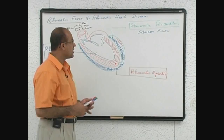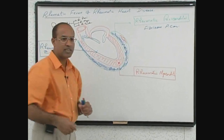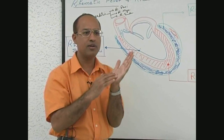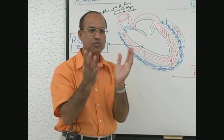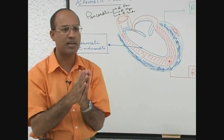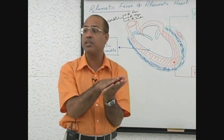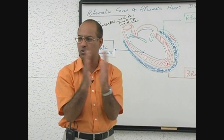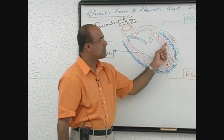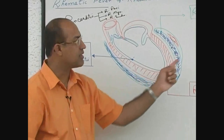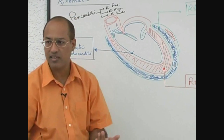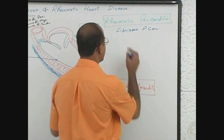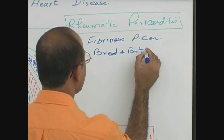In fibrinous pericarditis, if you open up the two layers of pericardium, you will find shreds of fibrin from both sides like spikes moving toward each other. This is like two pieces of bread with butter in between — when you separate them, the butter has spikes moving to each other. Due to this appearance, some people call it bread and butter pericarditis.